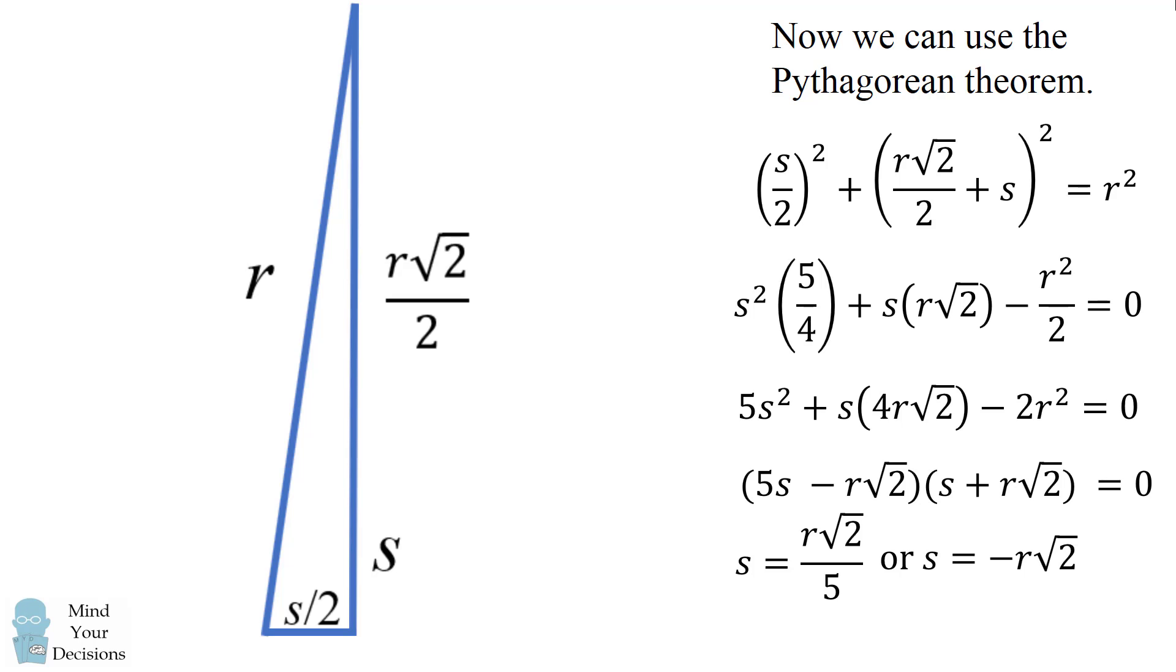s is equal to r√2 divided by 5 or s is equal to negative r times √2. The problem with the second solution is that would lead to a negative number for s. And we know that s has to be a positive number because it's a side length. So we can exclude this second solution.